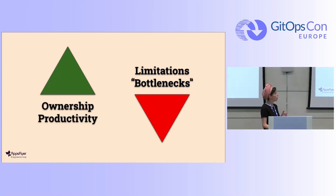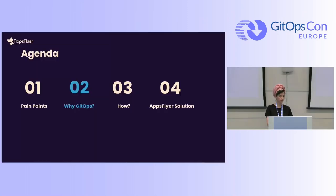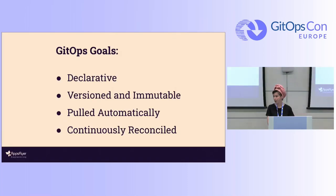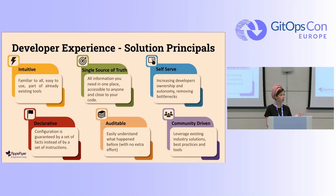After we understood the pain points, we decided we must increase the ownership of the developers and by that their productivity, and remove limitations and bottlenecks from the developer experience. Why did we choose GitOps as a solution? Most of you know that the four goals of GitOps are that it should be declarative, versioned and immutable, pulled automatically, and continuously reconciled — we should always get to the desired state the user wants for his service. We saw that these goals suit our needs.